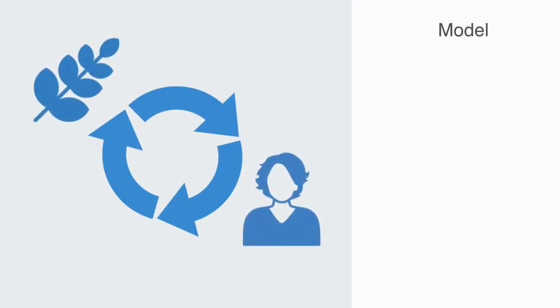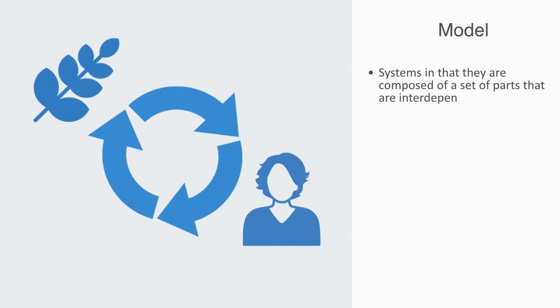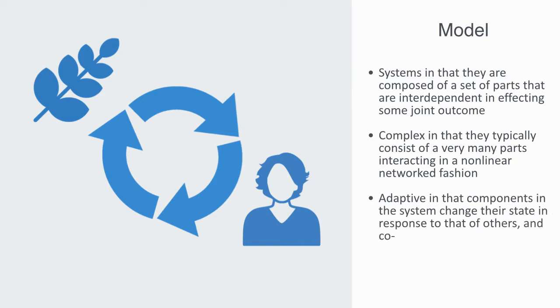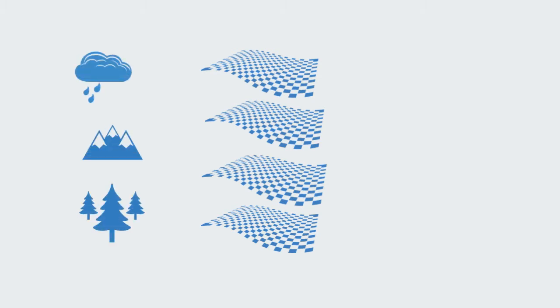A socio-ecological system is a type of complex adaptive system composed of two primary subsystems: a human society and economy on the one hand, and a biological ecology on the other. They are systems in that they are composed of a set of parts that are interdependent in affecting some joint outcome. They are complex in that they typically consist of a very many parts interacting in a nonlinear network fashion. They are adaptive in that the components in the system change their state in response to that of others, and in this capacity socio-ecological systems exhibit strong co-evolution as they develop over time.